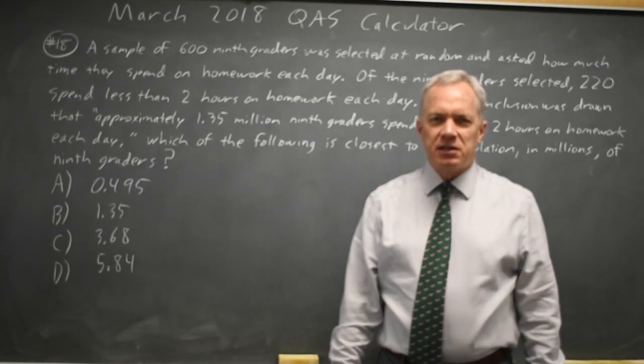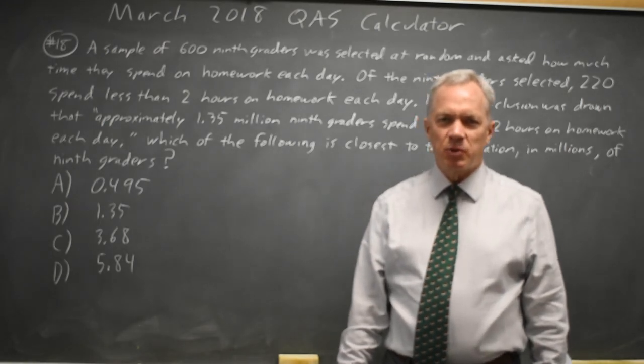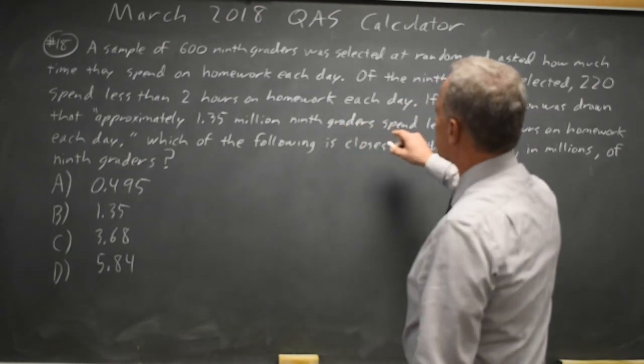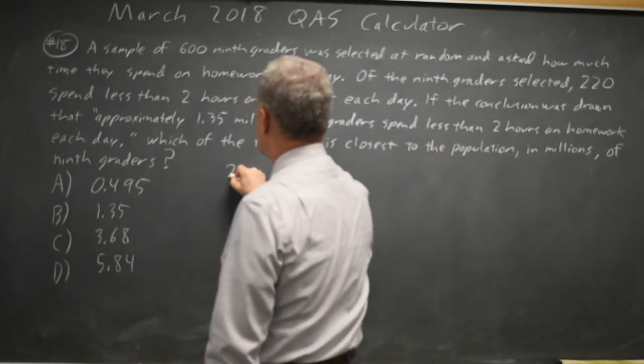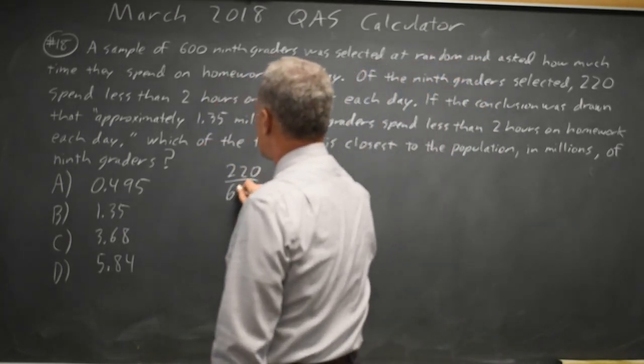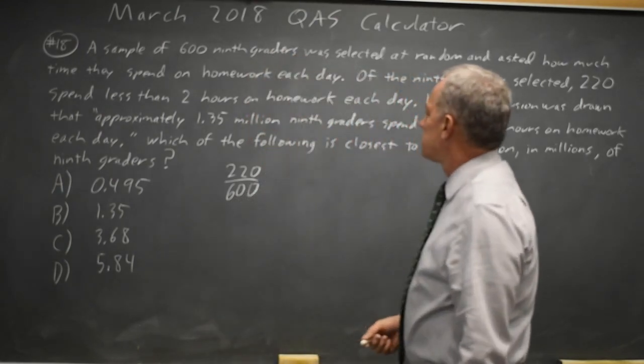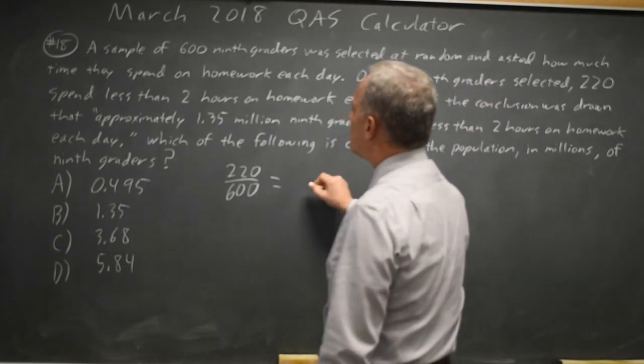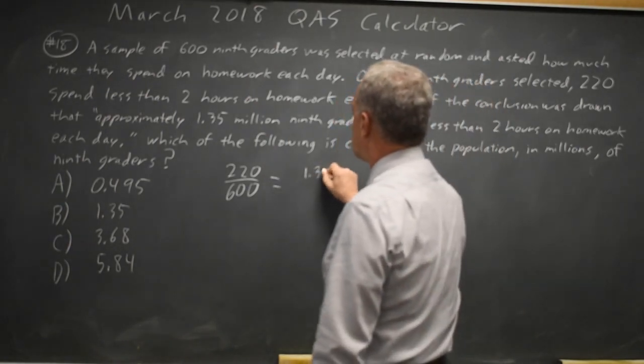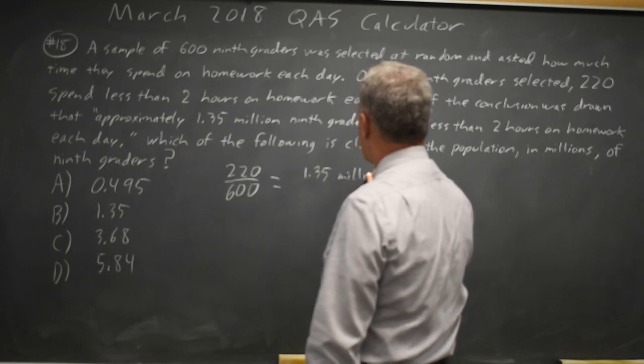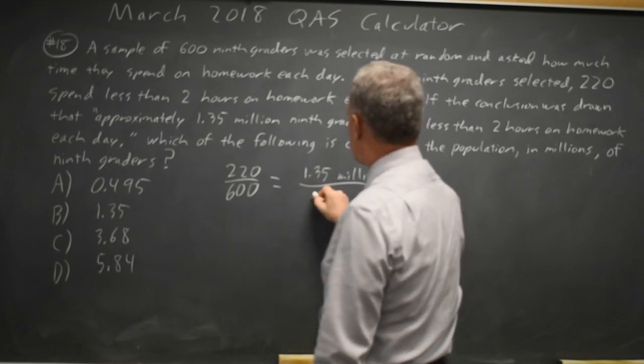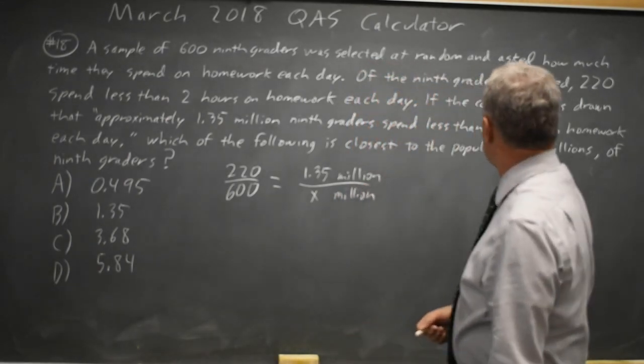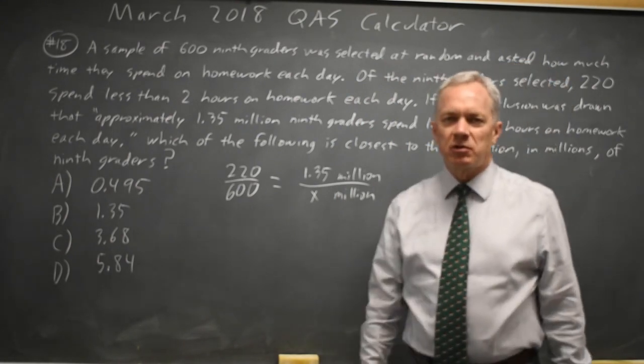This is question 18. The College Board is asking us to draw an inference from a sample proportion. We found that 220 out of 600 in the sample spend less than 2 hours on homework each day. And our inference was 1.35 million out of the whole population of 9th graders spend less than 2 hours on homework each day.